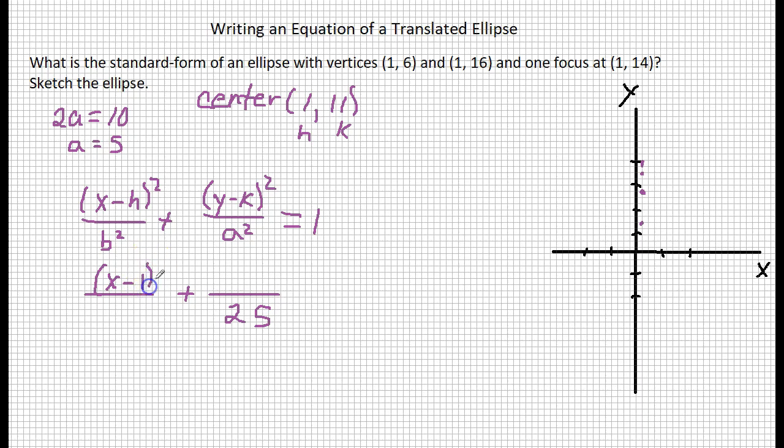So right now we have already got x minus h, so minus 1 quantity squared plus y minus k. k is 11, so y minus 11 quantity squared. Now, the only thing we have to find here is our b squared.